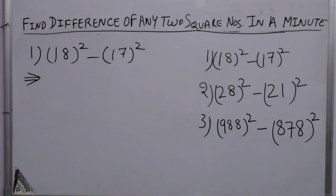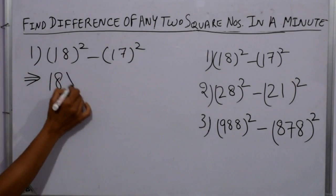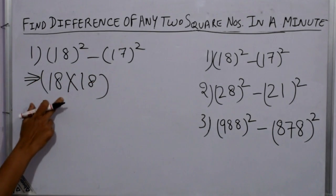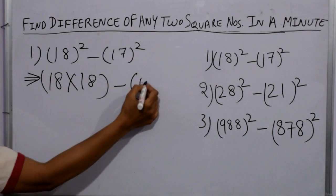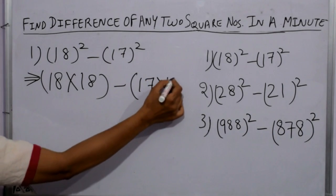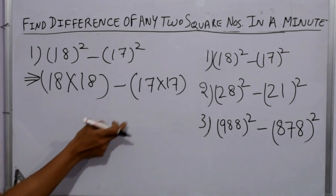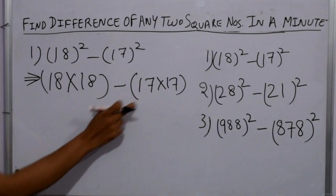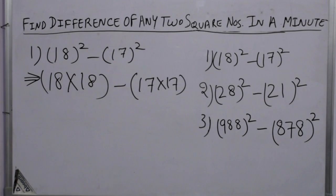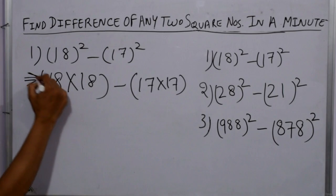Generally for these type of sums we use a conventional method that is we have to find out the square of 18, then square of 17, and then we subtract the answers of both the squares and we find the answer. This is a very complex method.